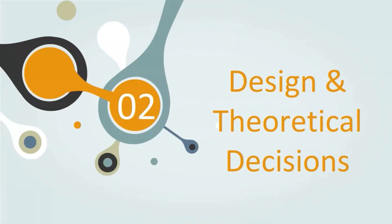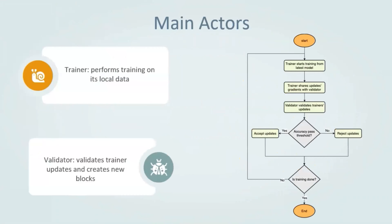I'll describe some of the design and theoretical decisions that we've taken, starting with the system structure. There are two main actors in the system: the trainer and the validator. The trainer performs training and the validator validates those updates. The trainer first starts training from the latest model. After training is done, it sends its updated gradients to the validator that validates those updates. If the accuracy passes a certain threshold, then the transaction is accepted; if not, it is rejected.